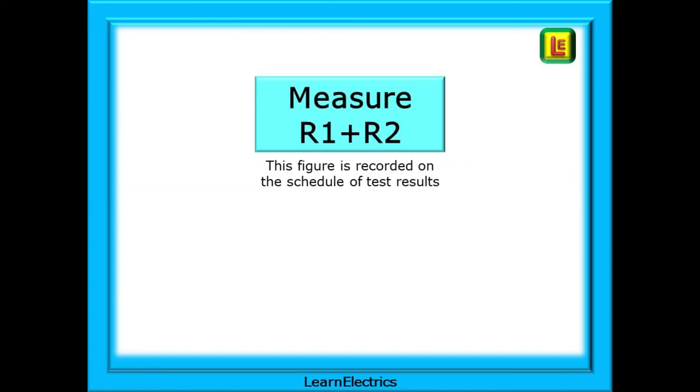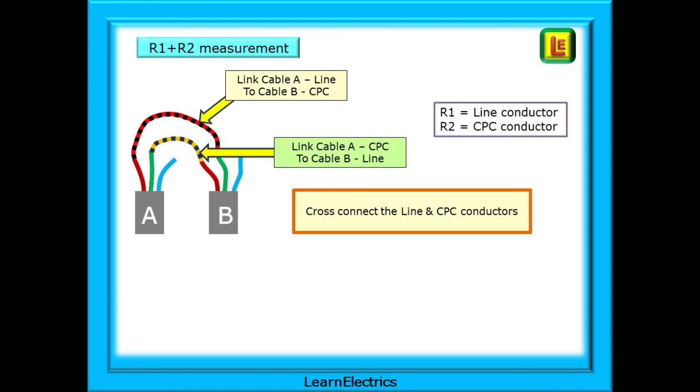If all is okay, we can now move on to measuring big R1 plus big R2. This figure is recorded on the schedule of test results, and it is important to get it right. Return to the consumer unit, and this time we must cross-connect the line and CPC conductors. Link cable A line to cable B CPC, and link cable A CPC to cable B line.